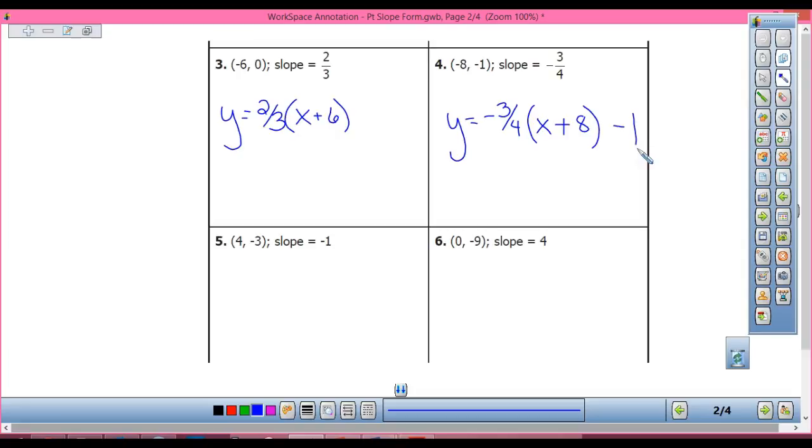Number 5, Brody. Y equals negative 1, X minus 4. Oh careful, X minus 4, there you go, minus 3. Good. This inside the parentheses is opposite, outside the parentheses is the same, because if you remember, it's that Y equals M, because it's X minus X₁, because we're subtracting there, but then we're adding our Y₁ at the end.